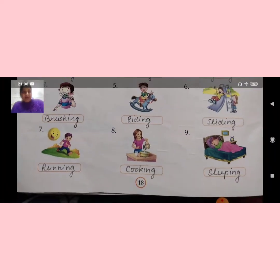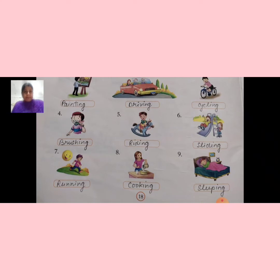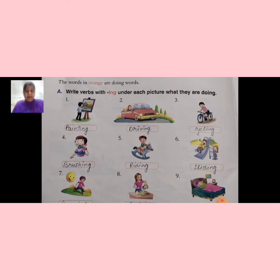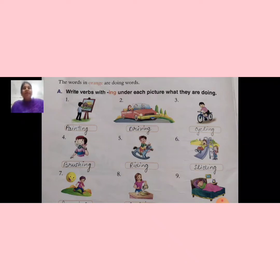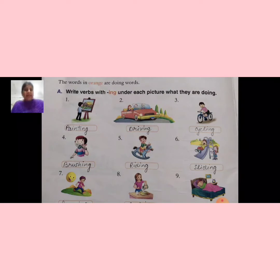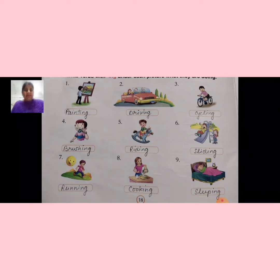Like this way, we have done exercise number A. In exercise number A, you will add ING with verbs. Exercise number A mein kya karna hai — jo action verbs hain, us mein aapko ING jodati huye complete karna hai. Toh we have done: picture number 1 painting, second drawing, third cycling, fourth brushing, fifth riding, sixth sliding, seventh running, eight cooking, and last sleeping. These are action words.